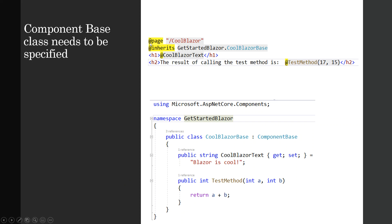The @page directive indicates the route /coolblazor, and it inherits CoolBlazorBase, which has a public property CoolBlazorText set to 'Blazor is cool', and a public method that accepts two integer arguments and returns their sum. If you liked this tutorial, please put your comments, likes, subscribe, and share this channel with your friends. Thank you.